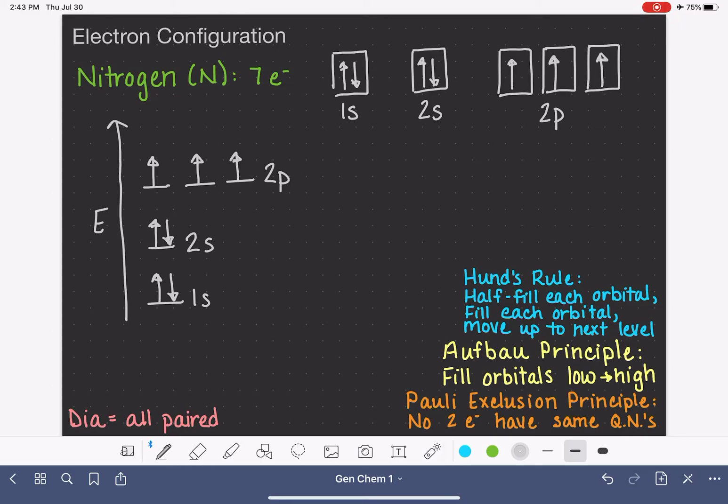From this, we can write the electron configuration. 1s has 2 electrons, so that's 1s². 2s has 2 electrons, so that is 2s². And the 2p has 3 electrons, 2p³.